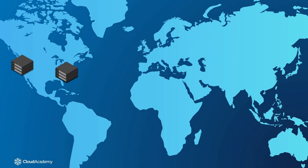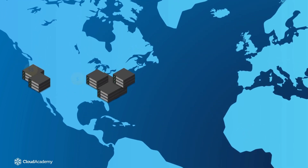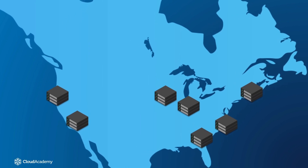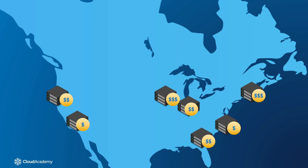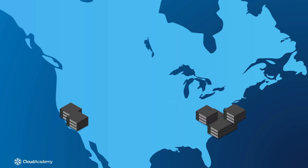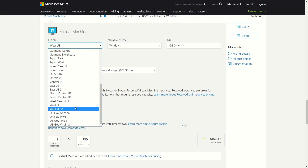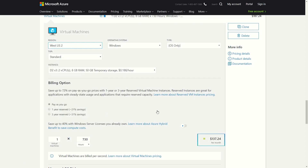Resource costs vary somewhat by region, so if possible, create your resources in a region with lower costs. Ideally, you should place your resources close to the geographical location of your consumers. Nonetheless, you may find a nearby region that offers the same resources for less. Use the pricing calculator to assist in finding the lower cost regions. Note the difference in cost between West US and West US 2, and also note the significant difference in cost savings when using one-year and three-year reserve plans.